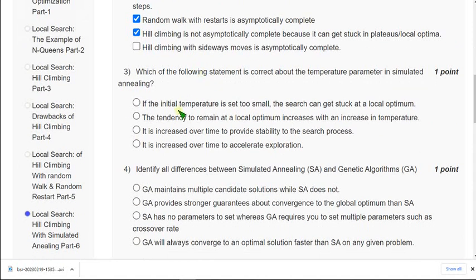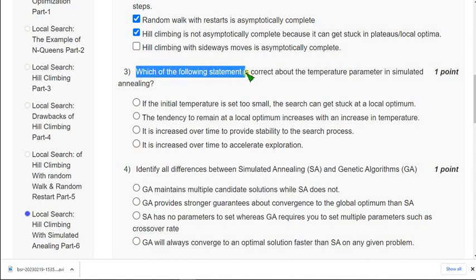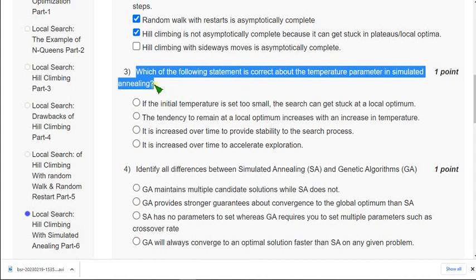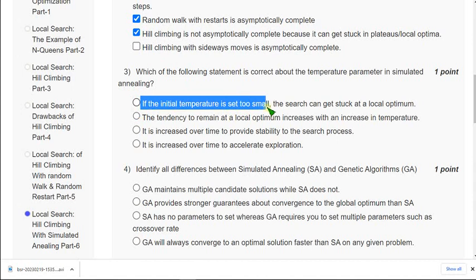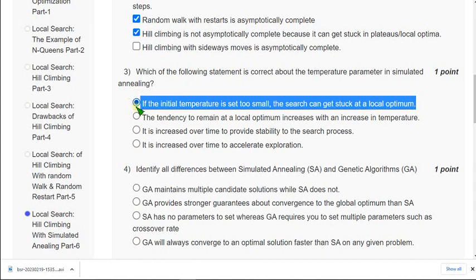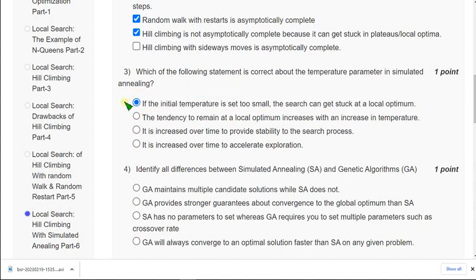Moving on to the third question: which of the following statement is correct about the temperature parameter in simulated annealing? For third question the probable answer I have got is first option: if the initial temperature is set too small, the search can get stuck at a local optimum. So first option could be the probable one.